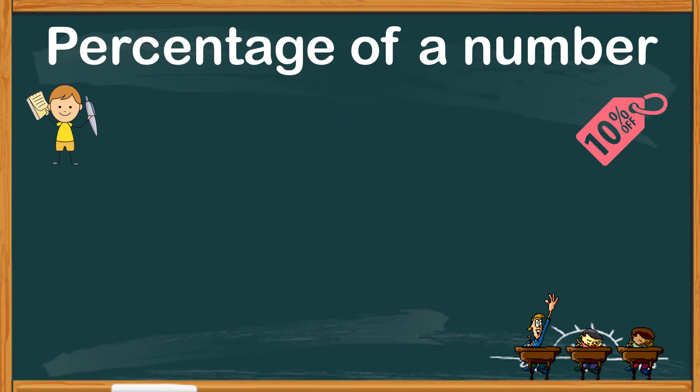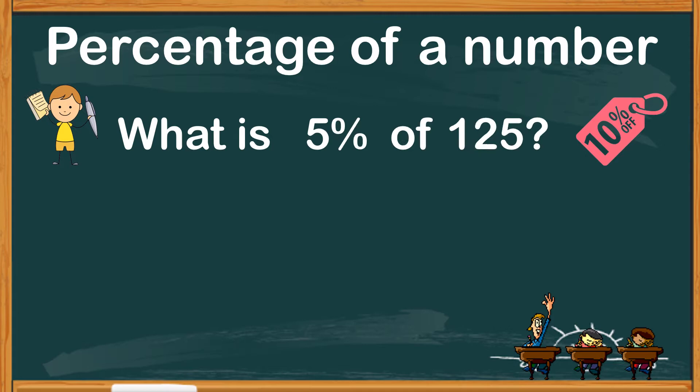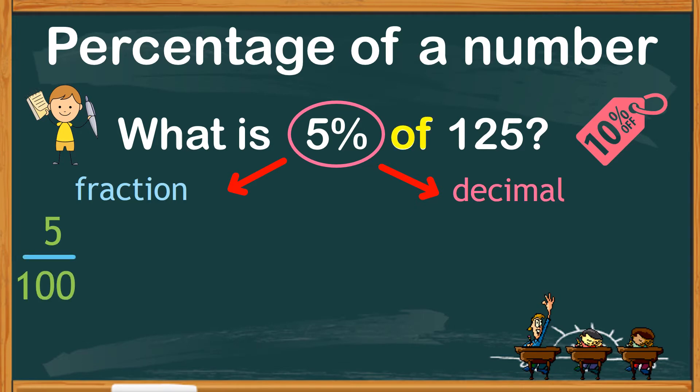Here is a similar question. What is 5% of 125? Just like what we did earlier, we can change the percentage into a fraction or a decimal. 5% in fraction is 5 over 100, and the word 'of' means multiply. So, times 125. Since 125 is a whole number, expressing it into a fraction goes with 1 as the denominator. You may reduce the fraction into its simplest form, or you may continue with multiplication. Anyway, dividing a number with 100 can be done just by moving the decimal point.